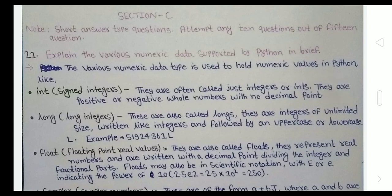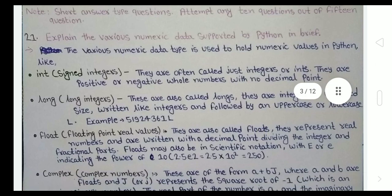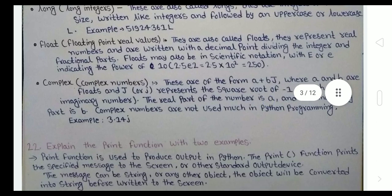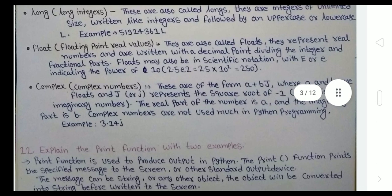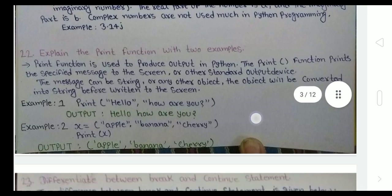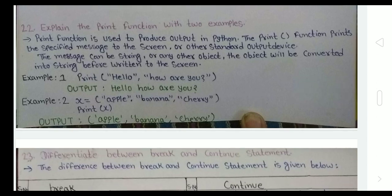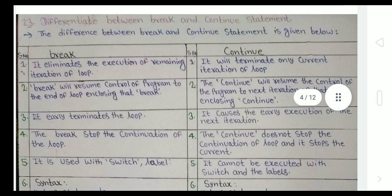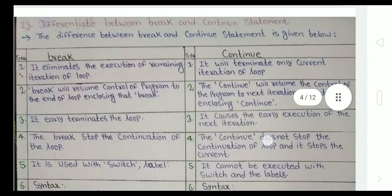Section C contains certain short answer questions, each question contains six marks. In this we have to do only ten questions, but I have done all fifteen. Here is the numeric data type supported in Python: int, float, complex. Just pause the video and read, guys. If I start to read, the video can be lengthy. Here's the print function with two examples.